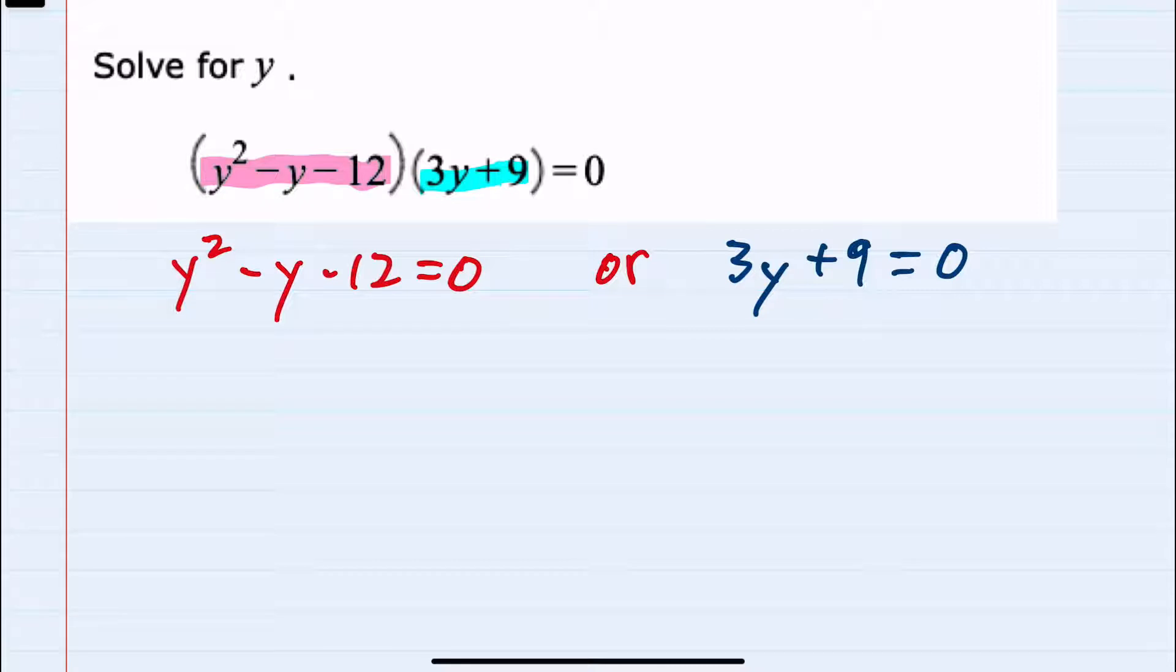Starting on the left, since we have a quadratic equals zero, to solve that I would need to factor that left hand side. So y squared would factor into y and y, and then we want numbers that multiply to be a negative twelve, but add to a negative one.